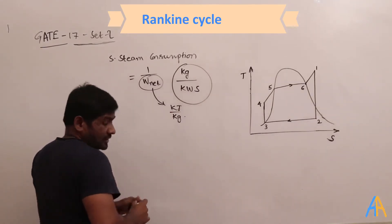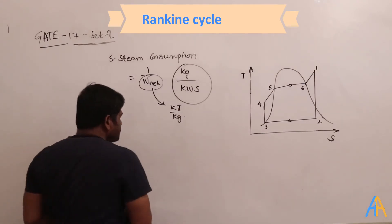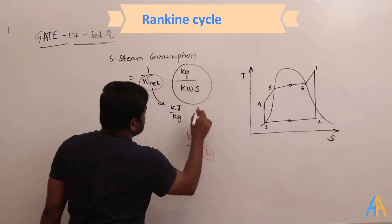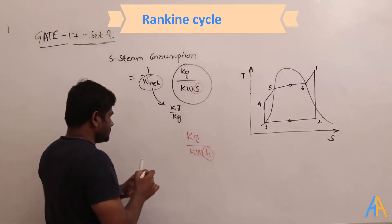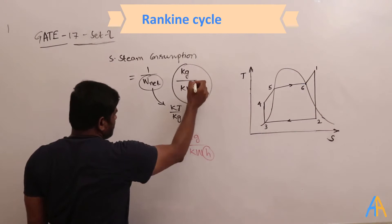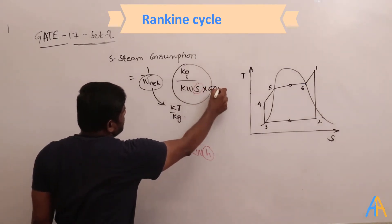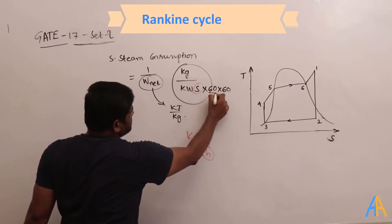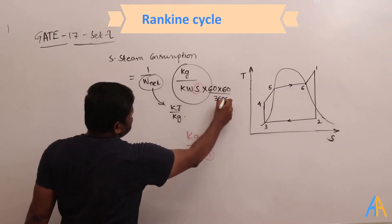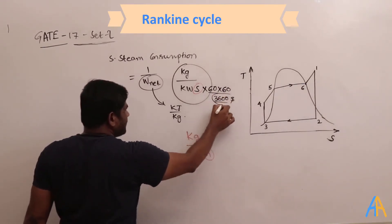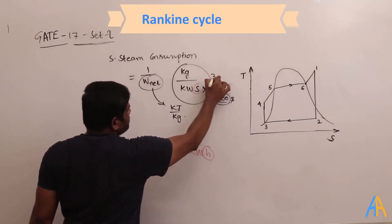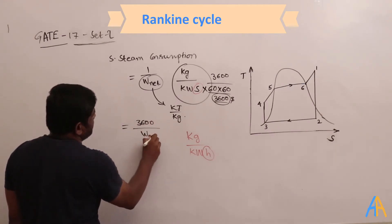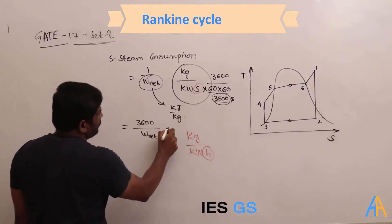The unit of W_net is kJ/kg, but the examiner wants the answer in kg per kilowatt-hour instead of per second. To convert seconds into hours, multiply by 60 minutes and 60 seconds, giving 3600. So the formula becomes 3600 divided by W_net, with units of kg/kWh.